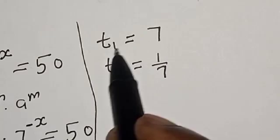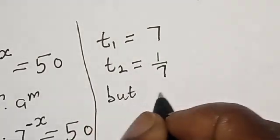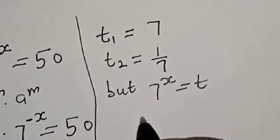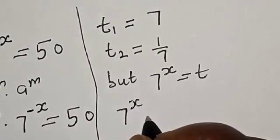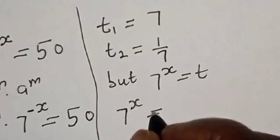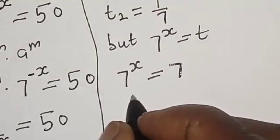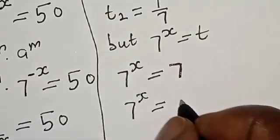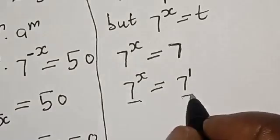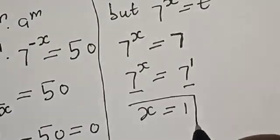Now, t1 is equal to 7 and t2 is equal to 1 over 7. But 7 raised to the power s is equal to t. So at t1 equal to 7, we have 7 raised to the power s is equal to 7 raised to the power 1. Since we have the same base, s is equal to 1. That is the first value of s.